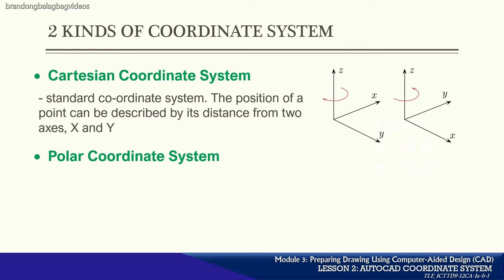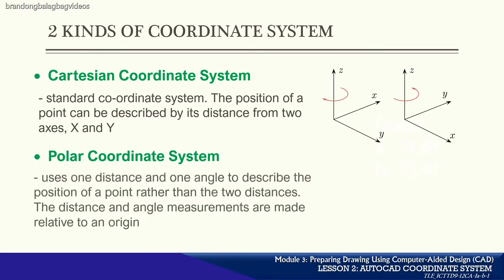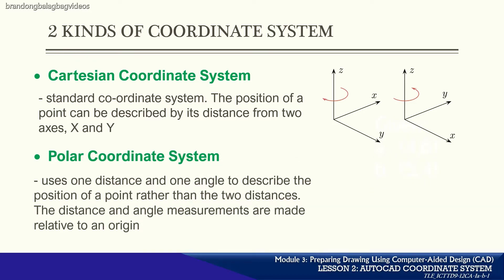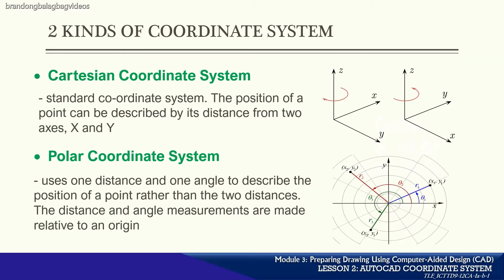On the other hand, the Polar coordinate system uses one distance and one angle to describe the position of a point rather than two distances. The distance and angle measurements here are made relative to an origin.